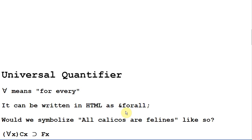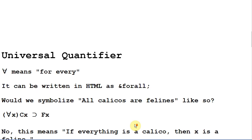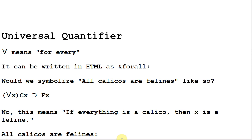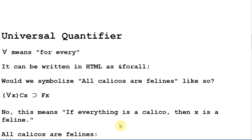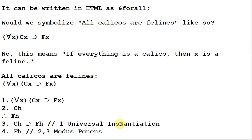Now would we symbolize all calicos are felines like so? For every x if x is a calico then x is a feline. And it looks like that might be the way to symbolize it but there's something wrong with this. Because what this is really saying is if everything is a calico then x is a feline. What we need here are parentheses to establish the scope of our quantifier.